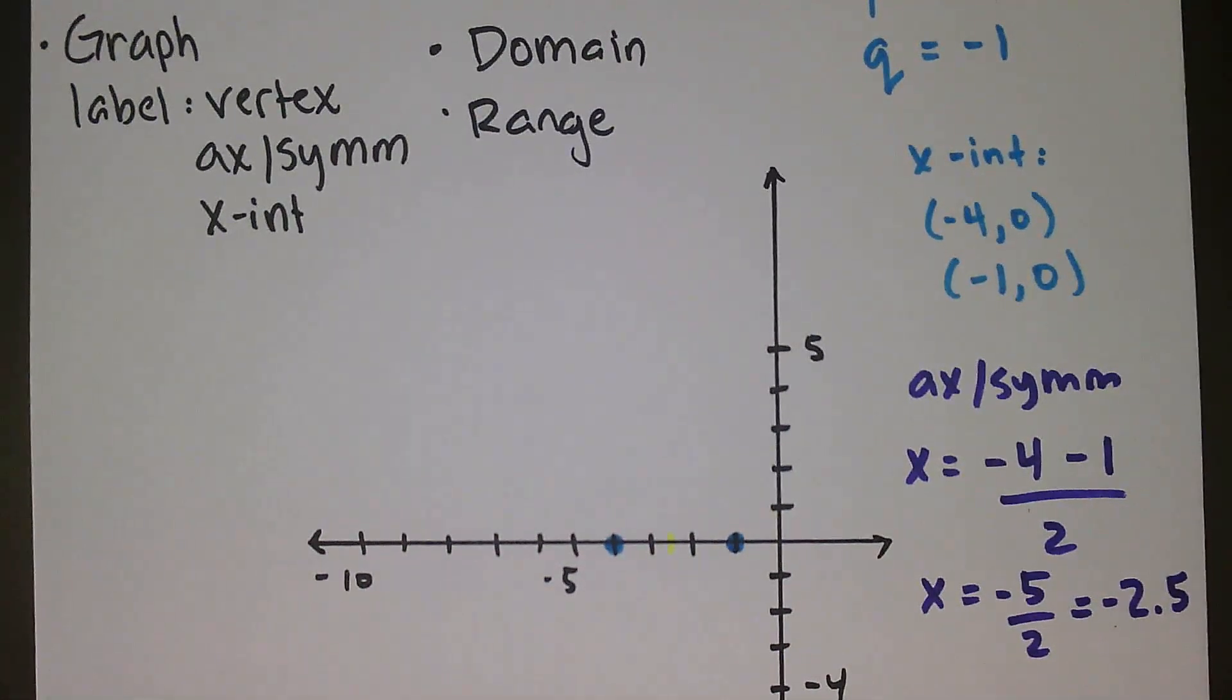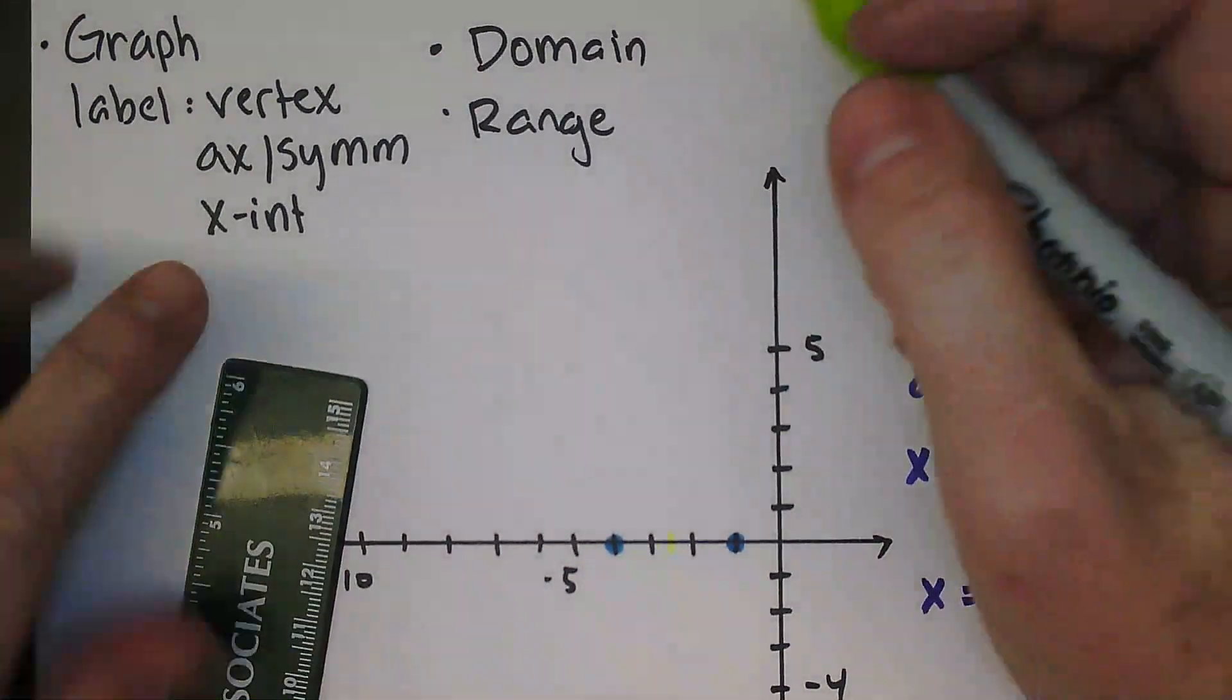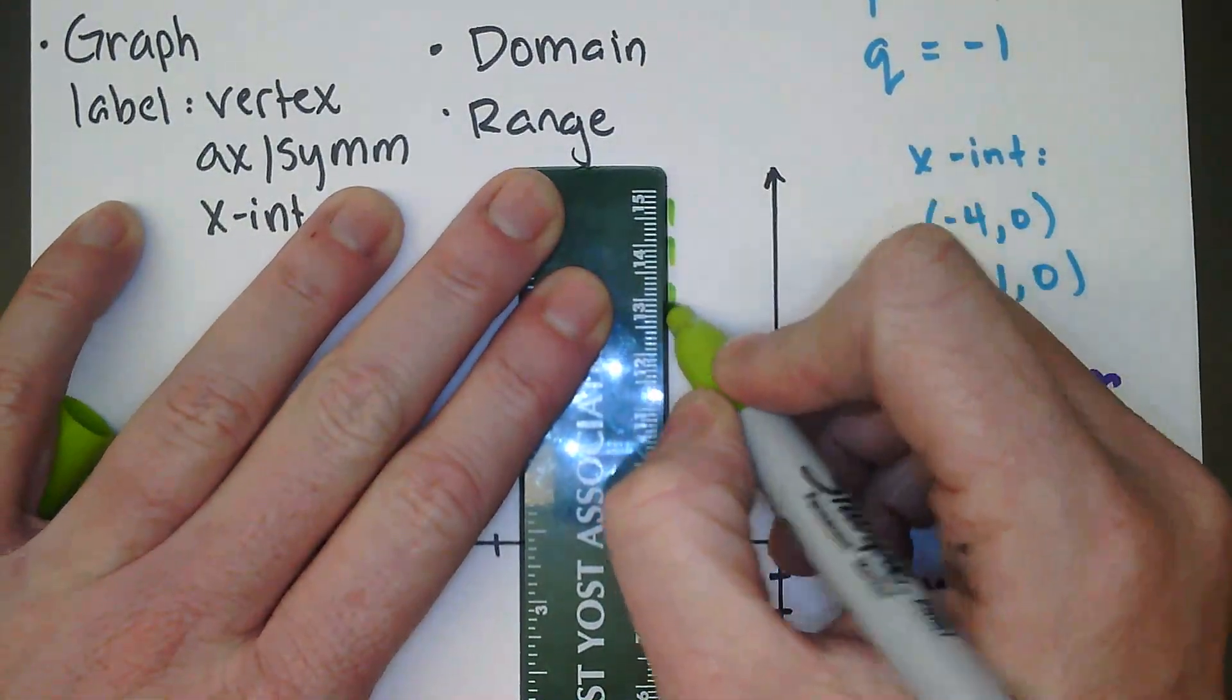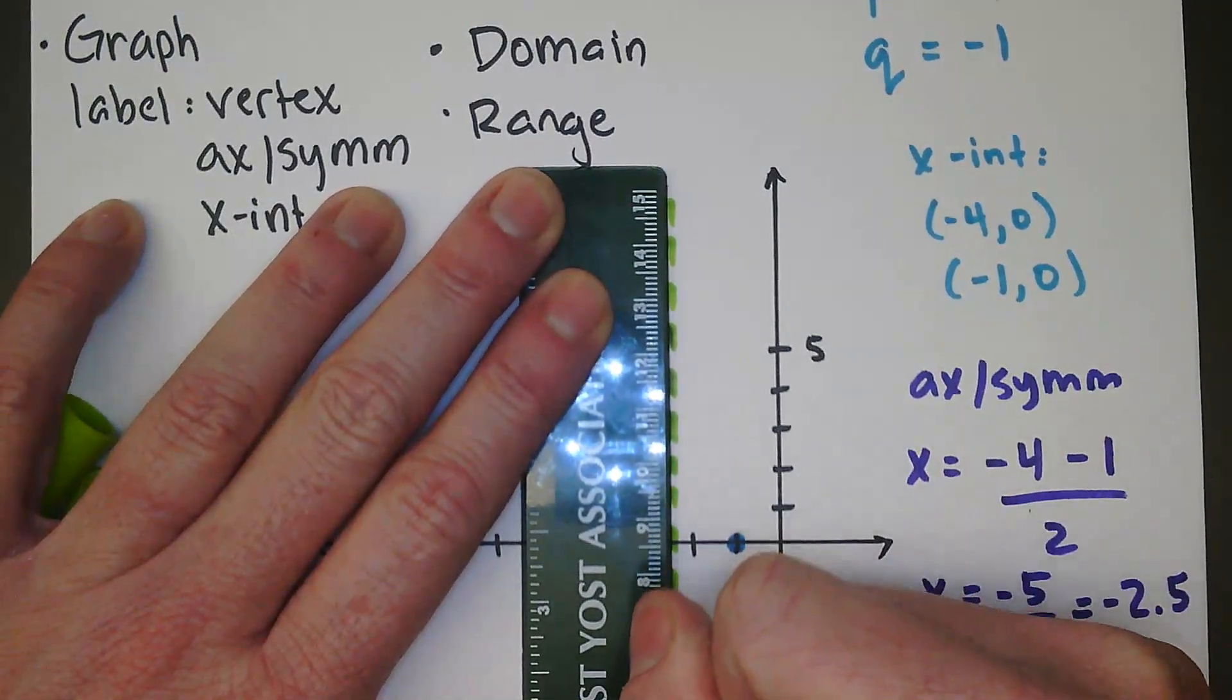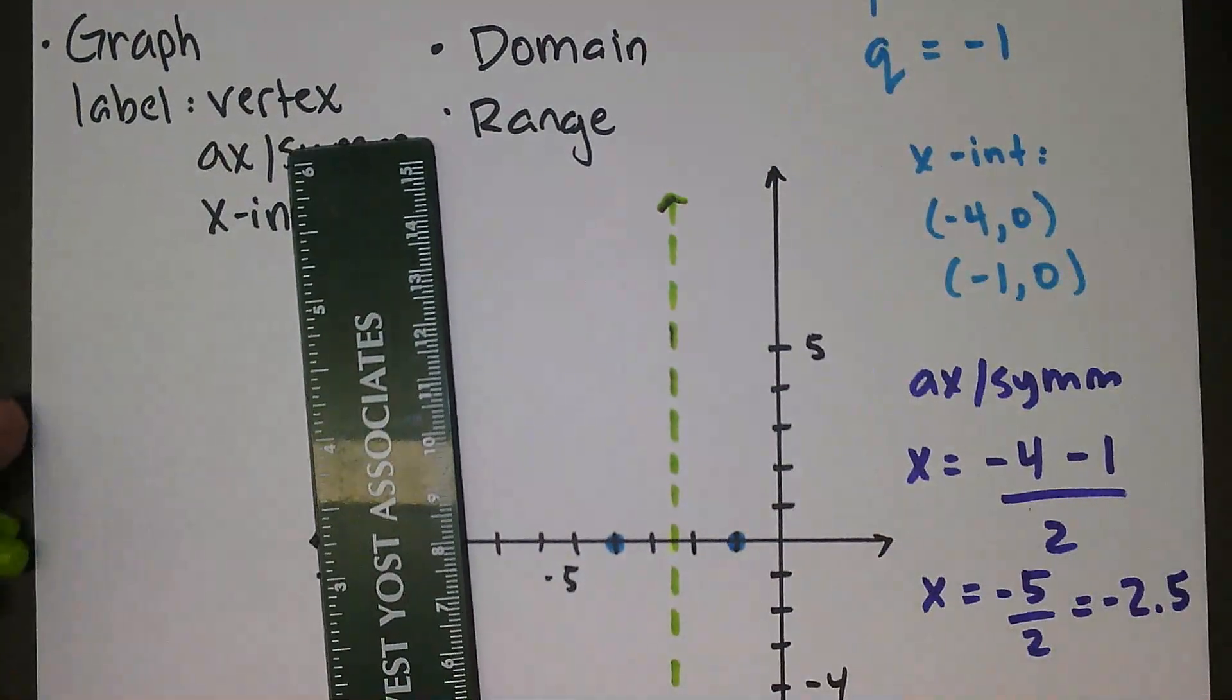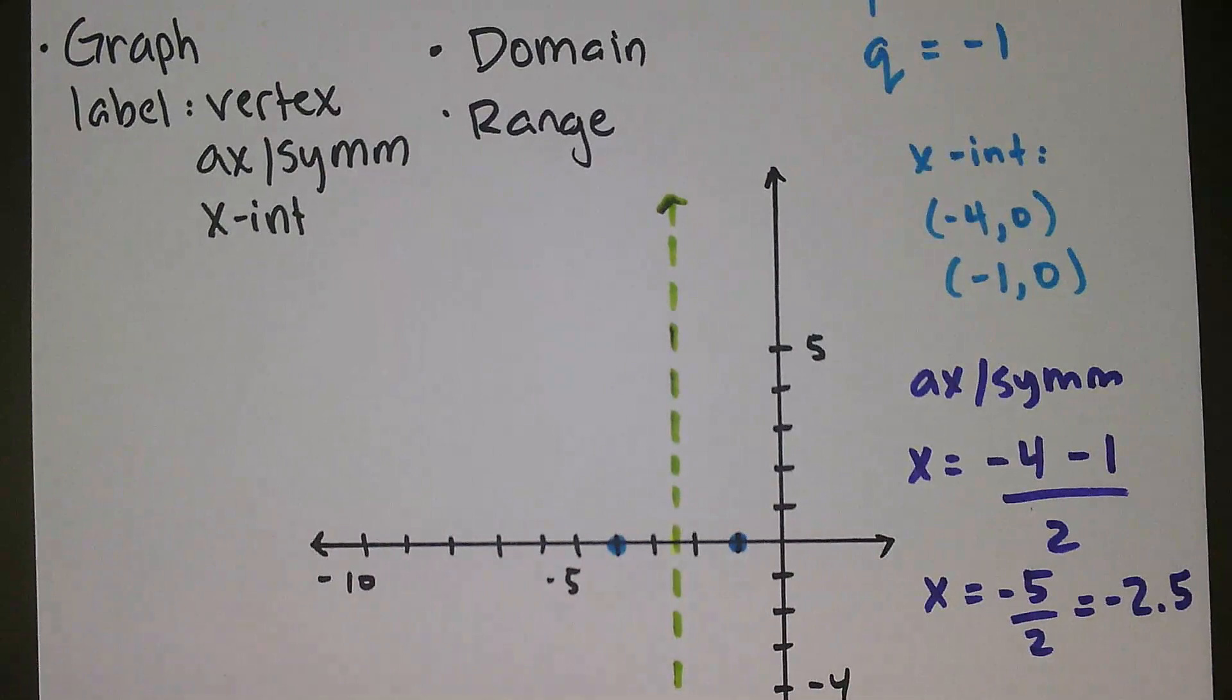And that's exactly where I was here. X is equal to negative 2.5. So I have an axis of symmetry there, and I'll go ahead and just draw that equation. And the axis of symmetry is x equals negative 2½. I'll draw that in with a nice little dashed line.